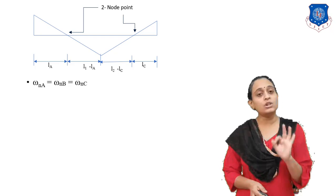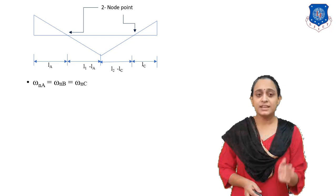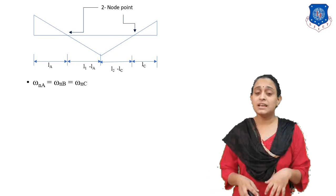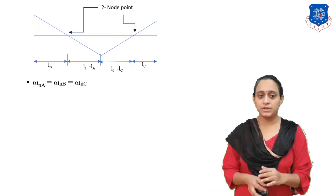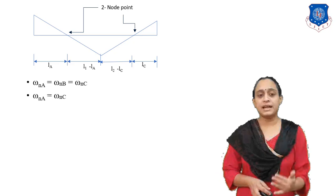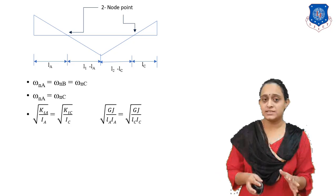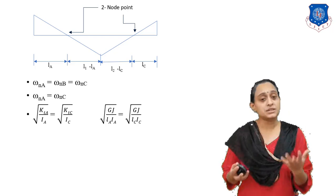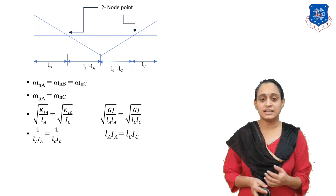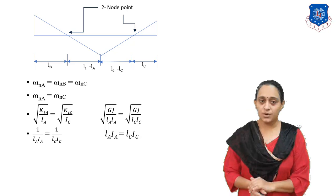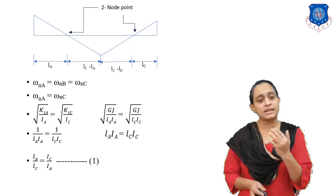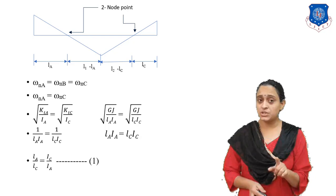For this two node case we compare all three frequencies: omega_NA equals omega_NB equals omega_NC. Since we cannot compare all three at once, we compare in parts. First compare omega_NA with omega_NC. This comparison gives us the effect of a two-rotor system. By solving this equation we finally get L_A I_A equals L_C I_C, or equivalently L_A by L_C equals I_C by I_A. This is equation 1 for two node position.